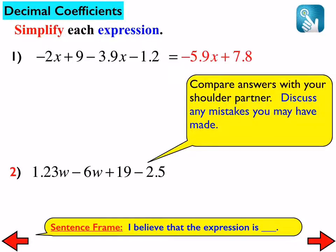Compare your answers on 2, 3, and 4 with your shoulder partner. Discuss any mistakes you may have made. How about number 2? What'd you get? Let's use the sentence frame up here. I believe that the expression is negative 4.77w plus 17.5. Is that what your shoulder partner got? We should be trying to figure out who's correct and why. That does simplify to negative 4.77w plus 16.5.